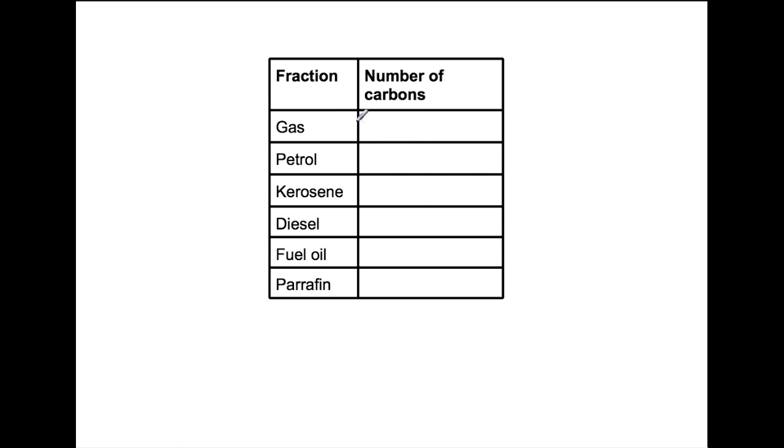As we said when we looked at the fractional distillation column, the number of carbons increases as you go from the top of the column to the bottom. Within the gas fraction range you have 1 to 4 carbons. Within the petrol fraction range you have 5 to 10 carbons.